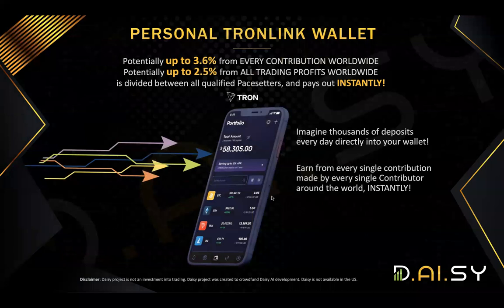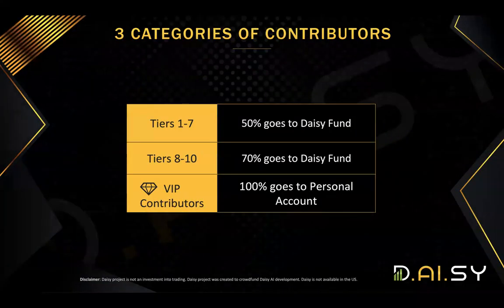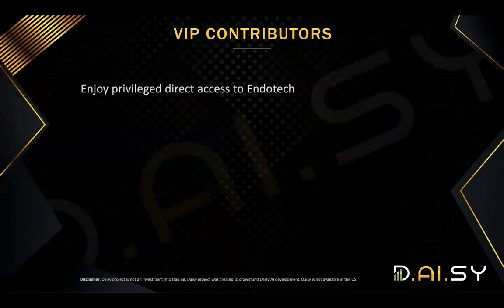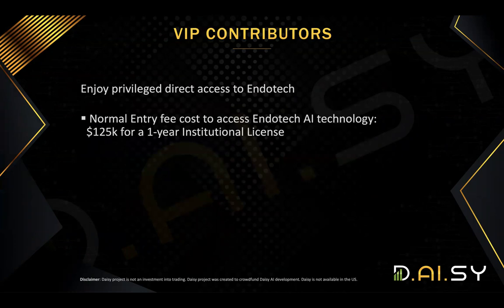So how do we participate? We participate with a Tronlink wallet, loading USDT on that wallet and contributing to the smart contract. Everything will be paid out instantly and divided between all qualified pay setters. There will be three categories of contributors: people who contribute to tiers one to seven — 50% will go into the DAISY fund for trading; members who contribute to tiers eight to ten — 70% will go to the DAISY fund; and VIP contributors where 100% of the contribution goes to trading.